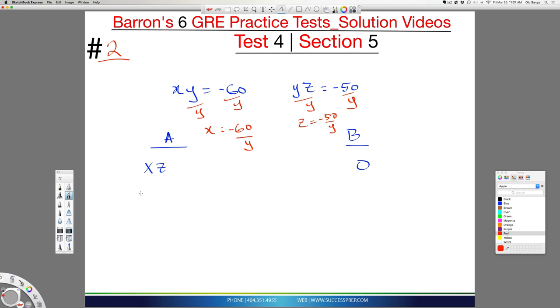So if I bring that over here, it means I pretty much have a negative 60 over y times a negative 50 over y.